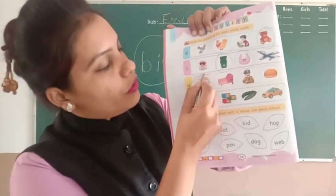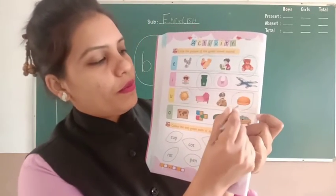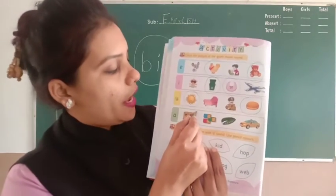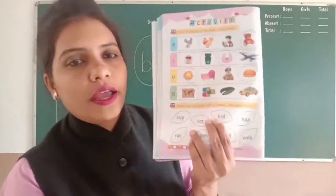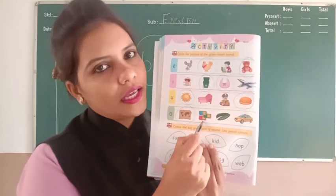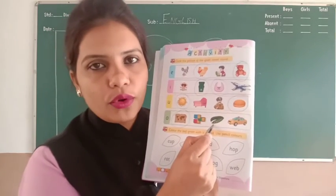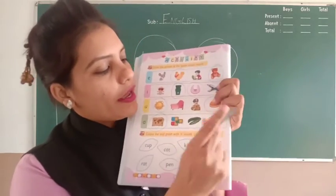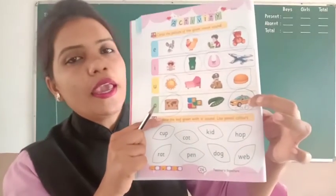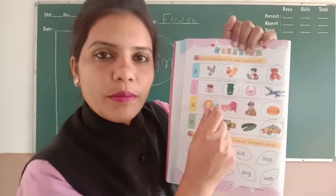U sound - U for sun, और यहाँ पे है burn - B-U-N। Then next is A sound। तो N-A-P map है। फिर यहाँ पे है sim - S-I-N होता है तो वहाँ पे A sound नहीं आता, circle नहीं करेंगे। फिर है pod - B-U-D, pod पे A sound नहीं है तो circle नहीं करेंगे। Last one है cab - C-A-B, cab तो A sound आता है।